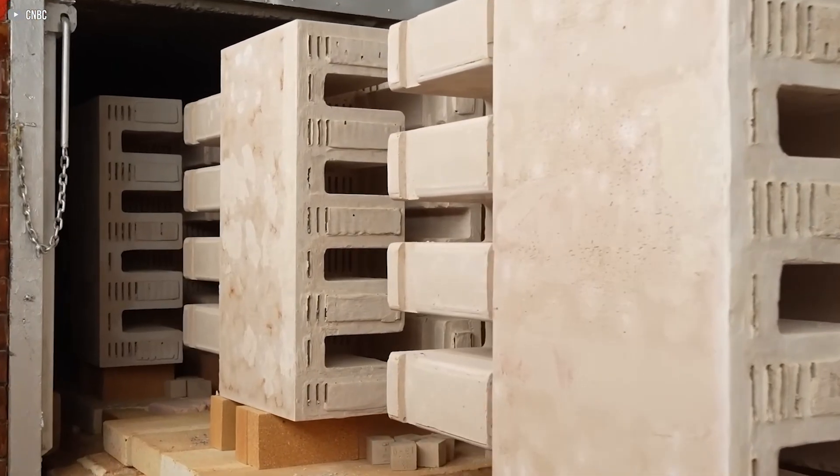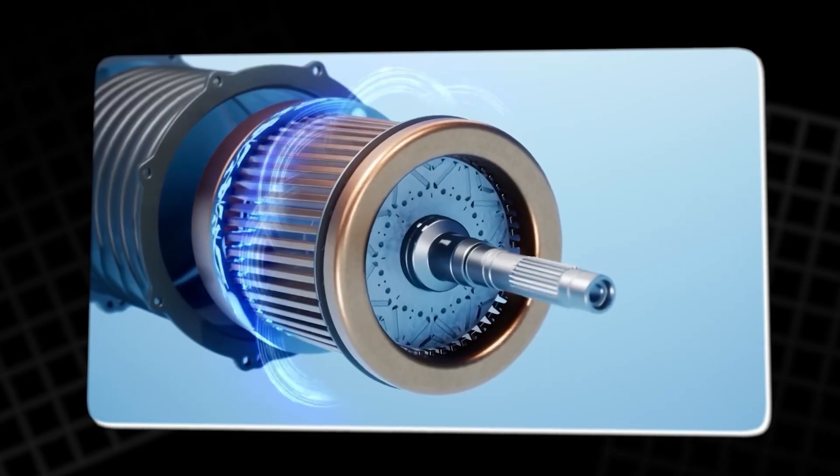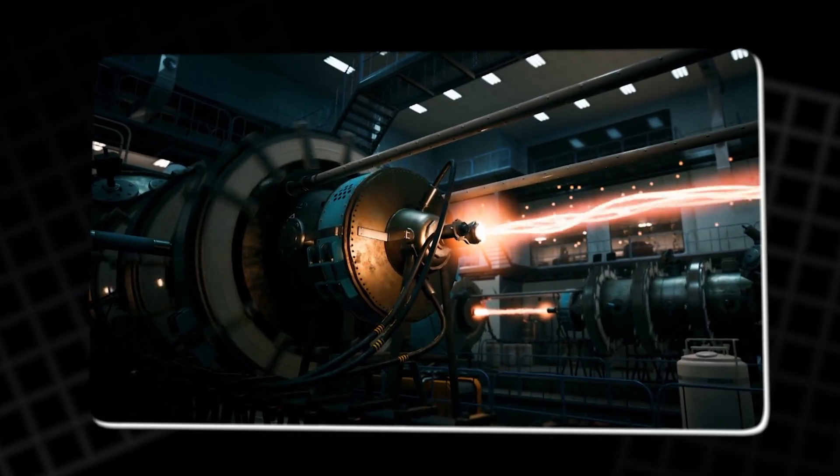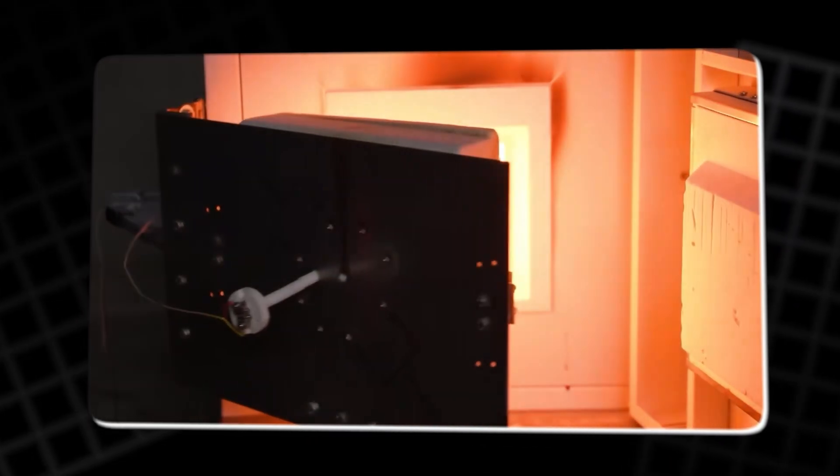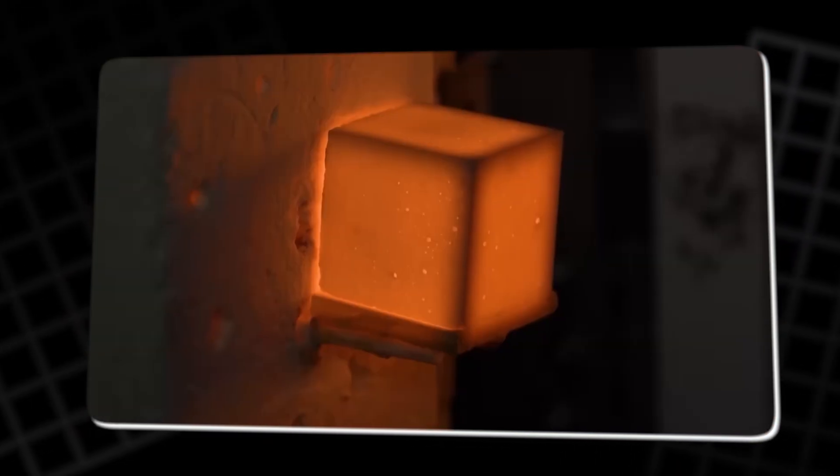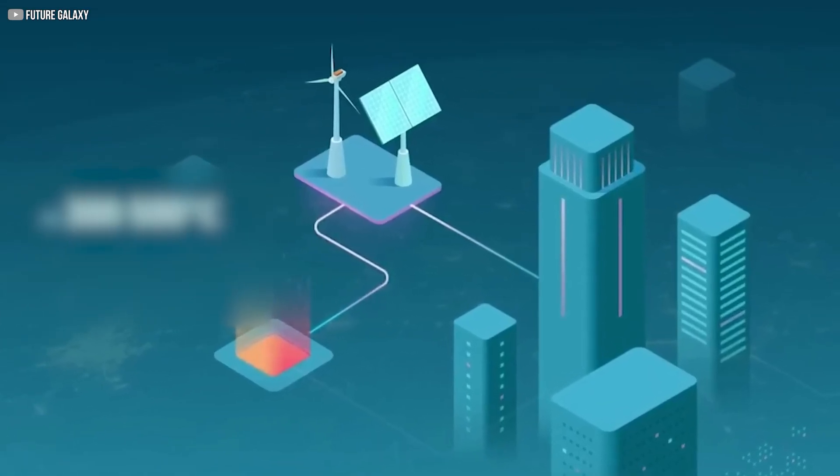That's where Rondo's idea becomes revolutionary. Instead of using electricity to power machines, then converting that electricity back into heat, they cut out the middle steps. They store electricity as heat directly. High temperature heat that industries actually need. No complex conversion, no energy loss chasing perfection.